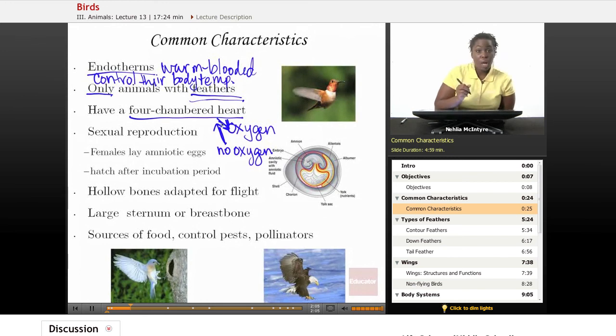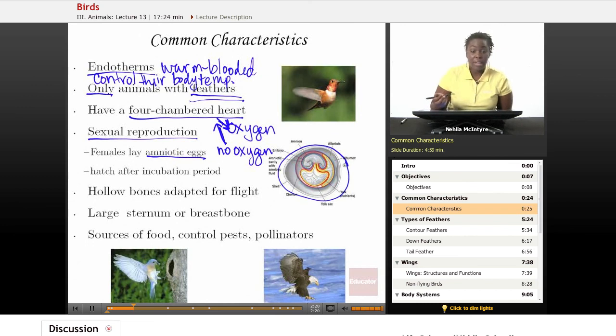All birds reproduce sexually and females actually lay amniotic eggs similar to the reptiles in that the amniotic egg has everything inside for the embryo or the small developing organism to develop on its own.